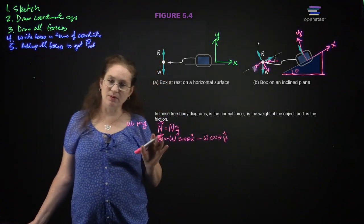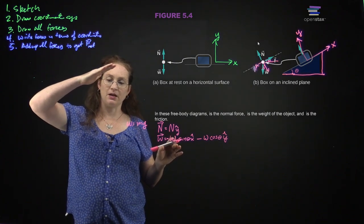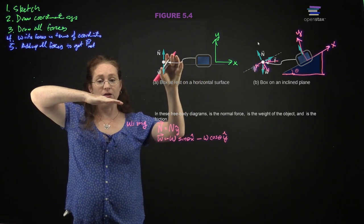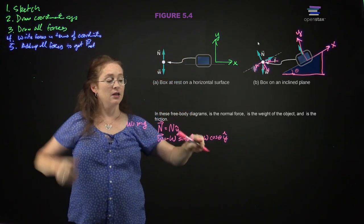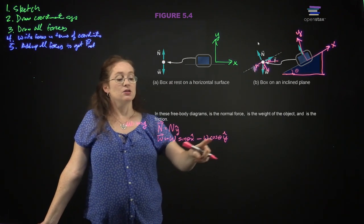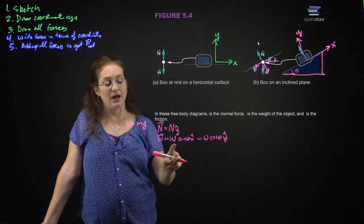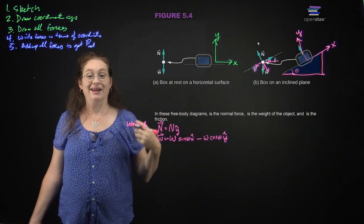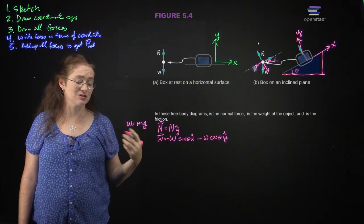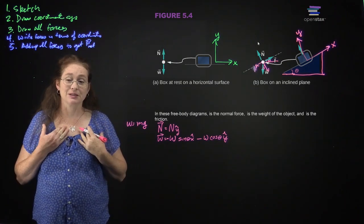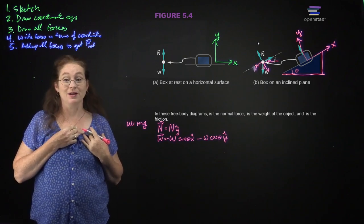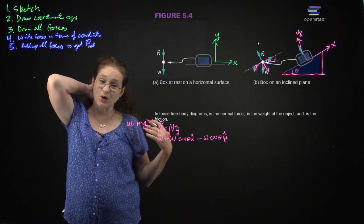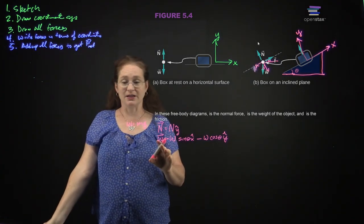Let's look at a limiting case. If theta equals zero — a flat surface instead of an inclined plane — we should get weight entirely in the negative y direction. With theta equals zero, cosine theta equals one, so we get negative W y-hat, and sine theta equals zero, so we get the right limiting case. Rather than try to avoid sloppy mistakes, I cross-check my work by taking cases I know I should get.